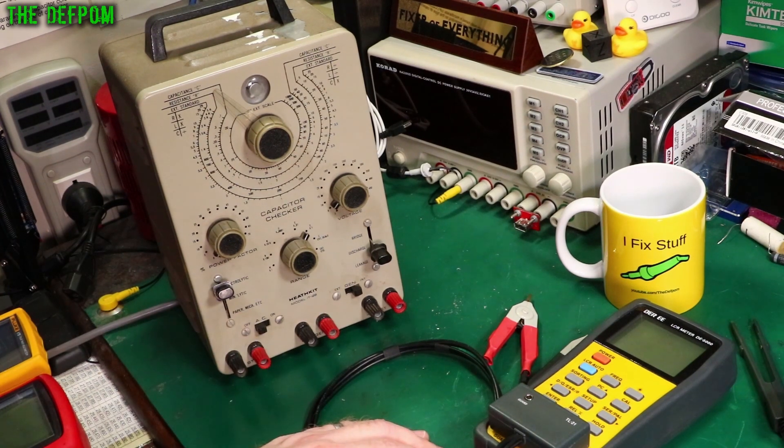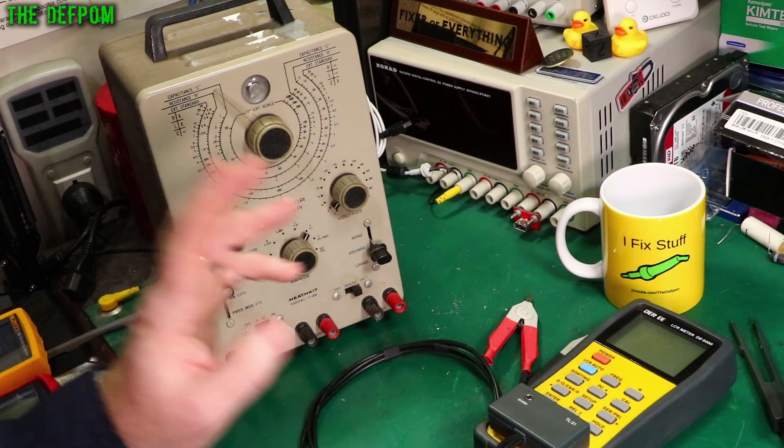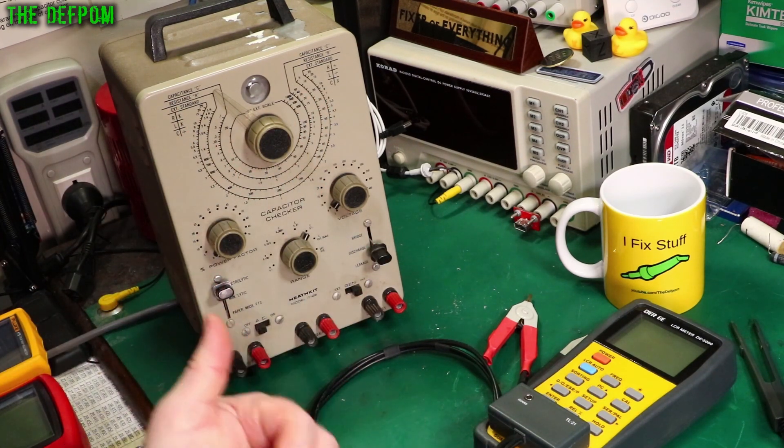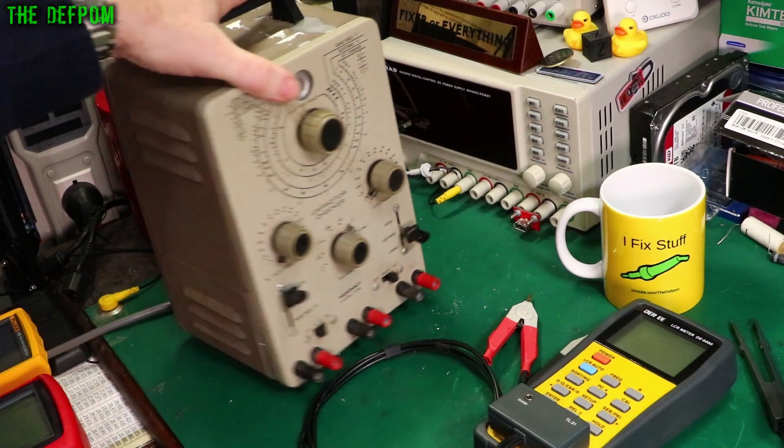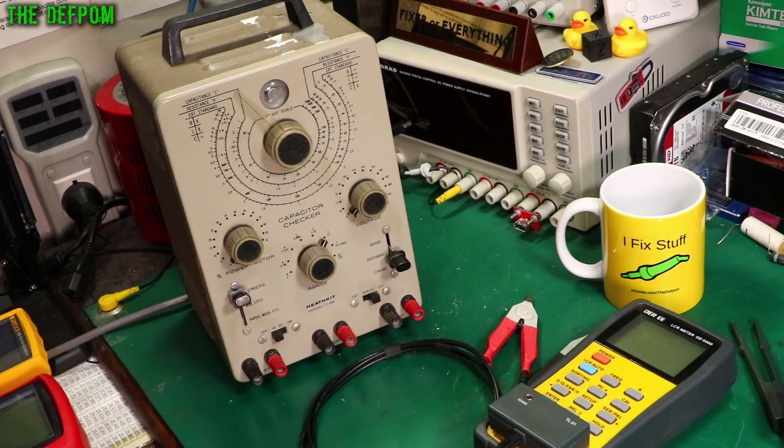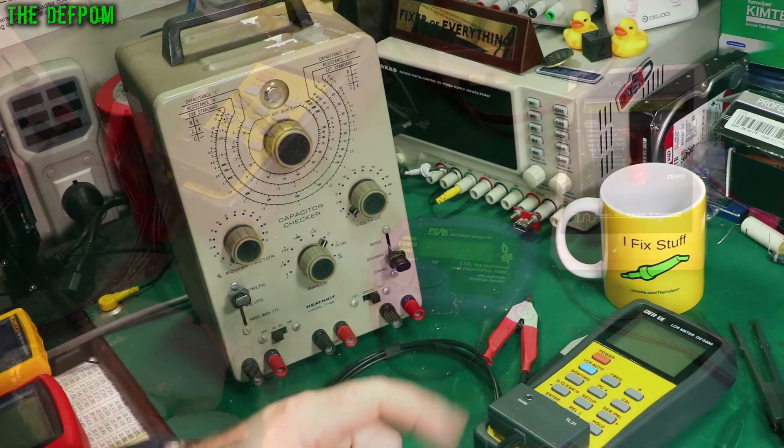This would be good for testing electrolytic leakage or other caps as well. You can do other stuff too. You can make sure that they actually survive their rated voltages. This can do capacitance measurements to tell you what the actual value is. Pretty handy. Old, but handy. And it's also fairly chunky. But you know, it's got a different purpose. This does stuff these other meters can't do.